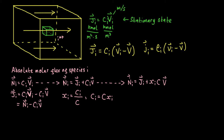The absolute molar flux of species I is equal to the molar density of species I multiplied by its velocity. Similarly, we can define the absolute molar flux of the system as the molar density of the system multiplied by its velocity. This gives the final expression: the absolute molar flux of species I equals the diffusive contribution J_i, plus the mole fraction of species I multiplied by the absolute molar flux of the system.